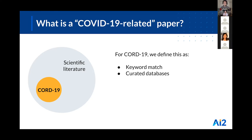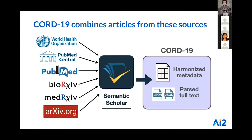For CORD-19, we use keyword search to identify relevant papers and include papers from curated COVID-19 specific databases. The keywords cover not only COVID-19 but also historical coronaviruses such as SARS and MERS. We include papers where a keyword shows up in the title, abstract, or full text. Sources include the WHO's COVID-19 literature database, PubMed Central, PubMed, and various preprint archives. These papers are ingested through the Semantic Scholar data pipeline, where we clean and harmonize metadata and extract full text from open-access PDFs.